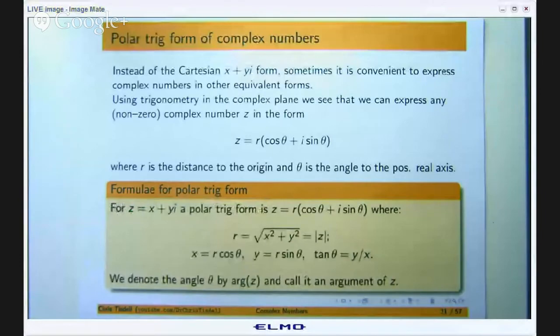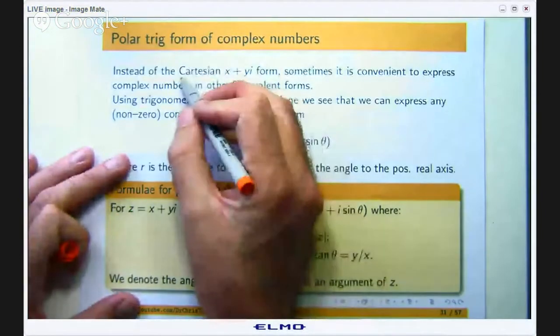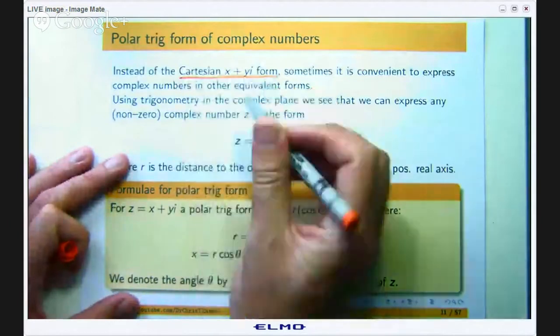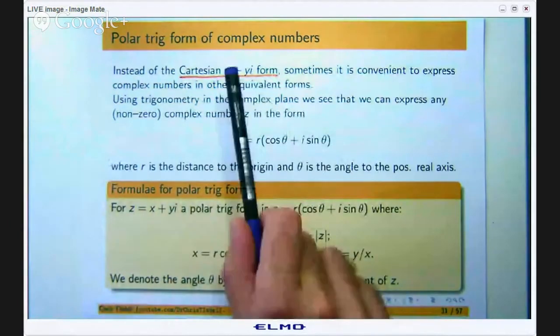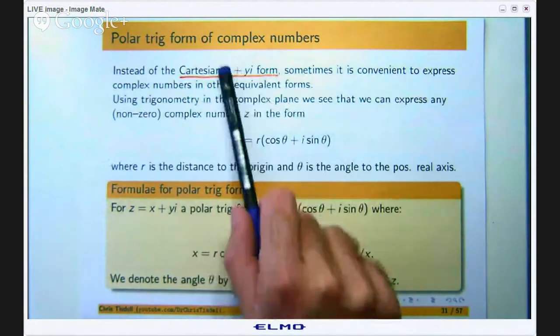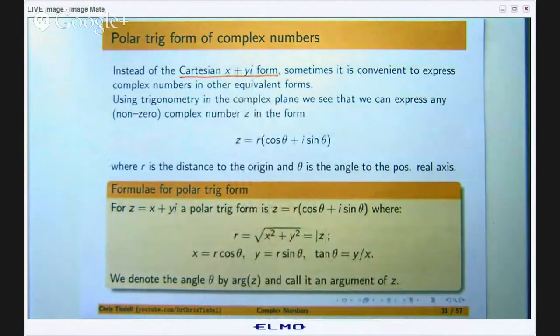Like I said, up until now we have been dealing with this Cartesian form x plus yi where x and y are real, x is called the real part of the complex number, y is called the imaginary part. Sometimes it is convenient to express complex numbers in other equivalent forms, especially for giving geometric meaning and also simplifying calculations like powers and products.